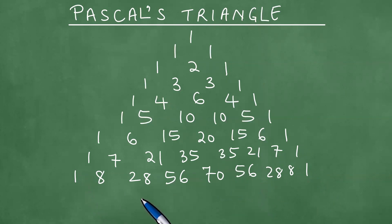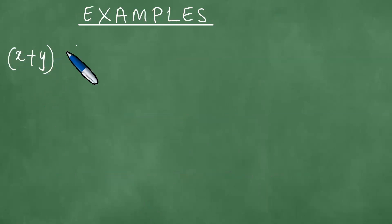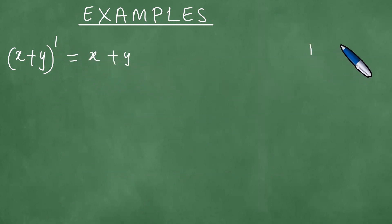Now we're going to look at specific examples and expansions. Let's expand first x plus y to the power 1. This is exactly the same as x plus y, and it corresponds to the row 1, 1 — reflecting the coefficients of x and y.